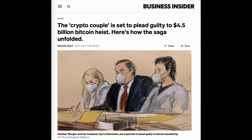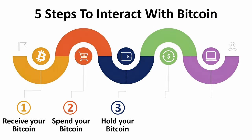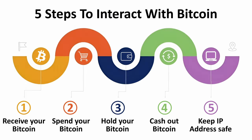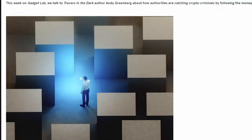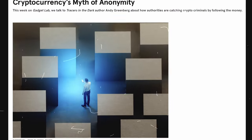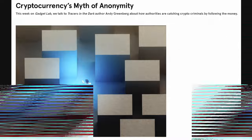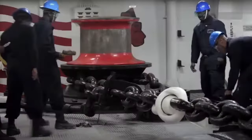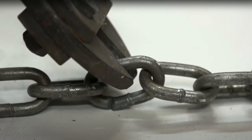Bitcoin is only untraceable until you make a mistake. Your interactions with Bitcoin can be divided into five steps. A mistake at any one step could mean your privacy is destroyed for that Bitcoin account. You can think of each step as a link in a chain — one weak link and the whole chain is weak.